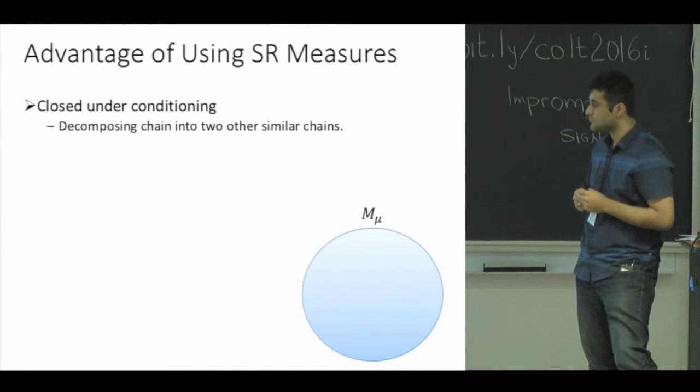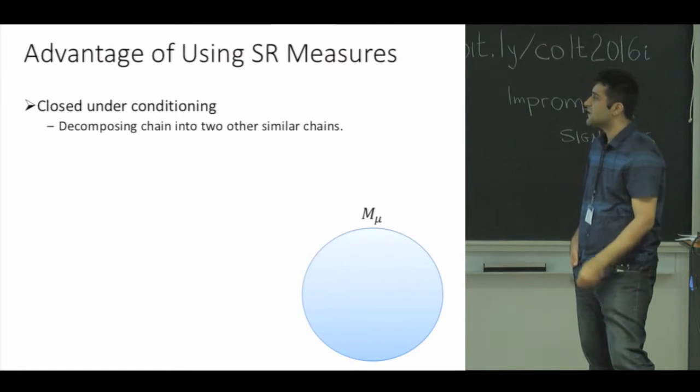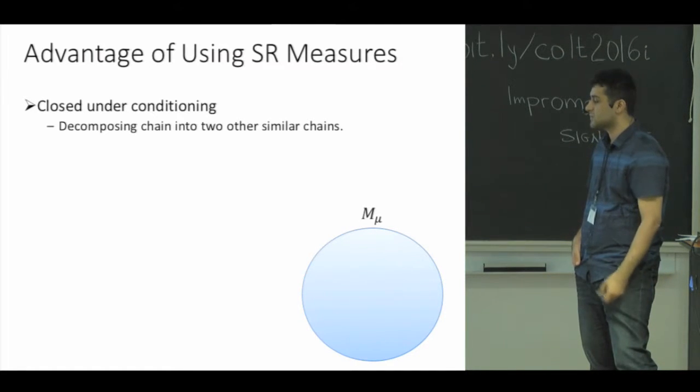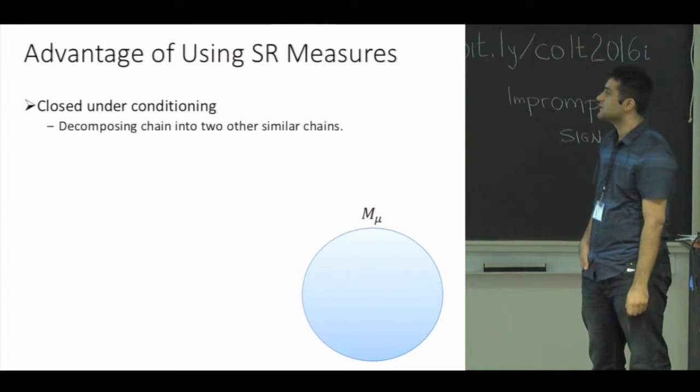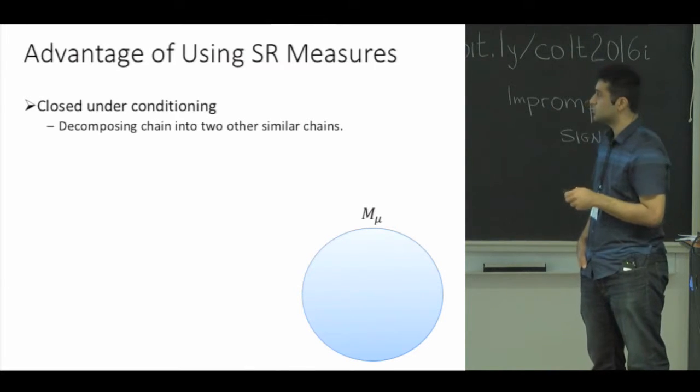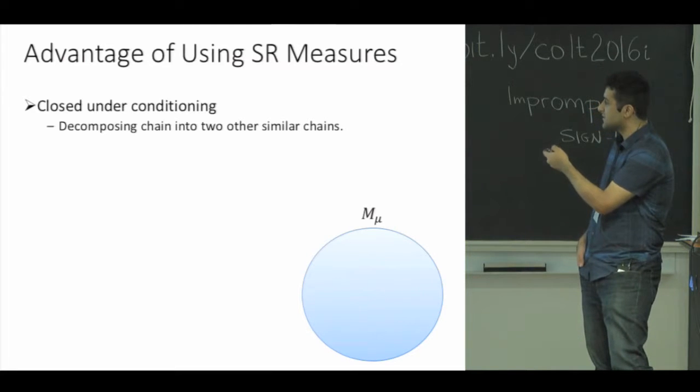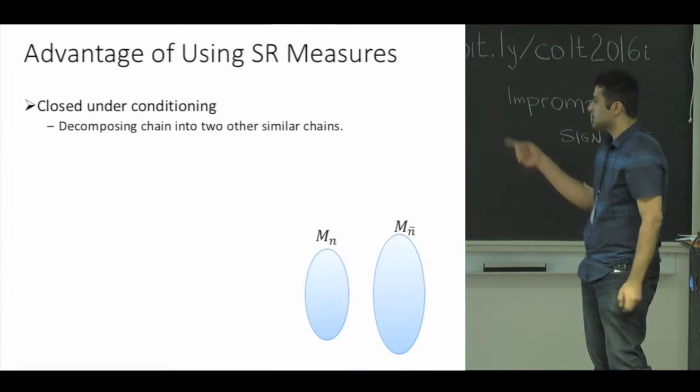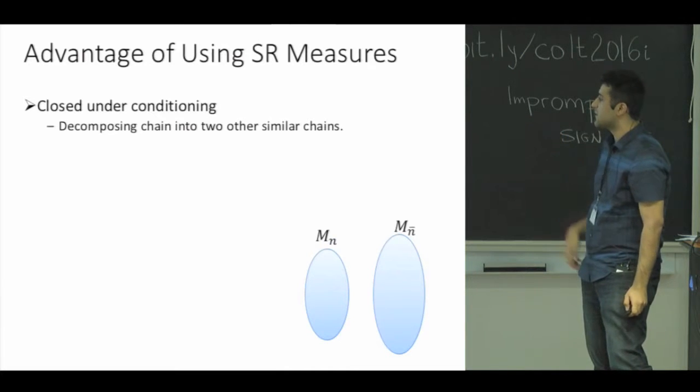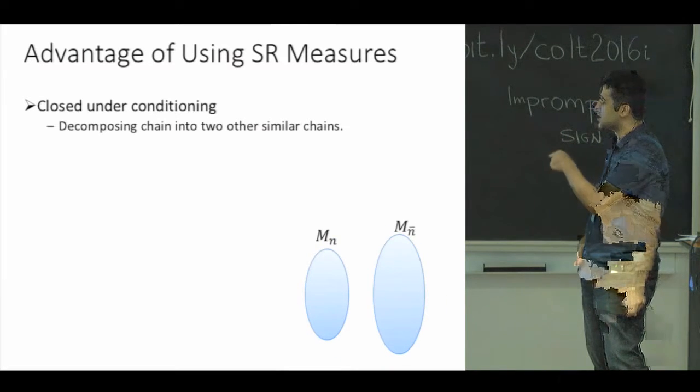The first property of SR measures that we use is that they are closed under conditioning, meaning that if you fix an element and condition on all the subsets containing that element, or all the subsets not containing that element, you will get two other SR measures. We will take advantage of this to decompose the chain into two parts, and we use induction to bound the mixing time of each of these two parts, as they are also defined on two SR measures.